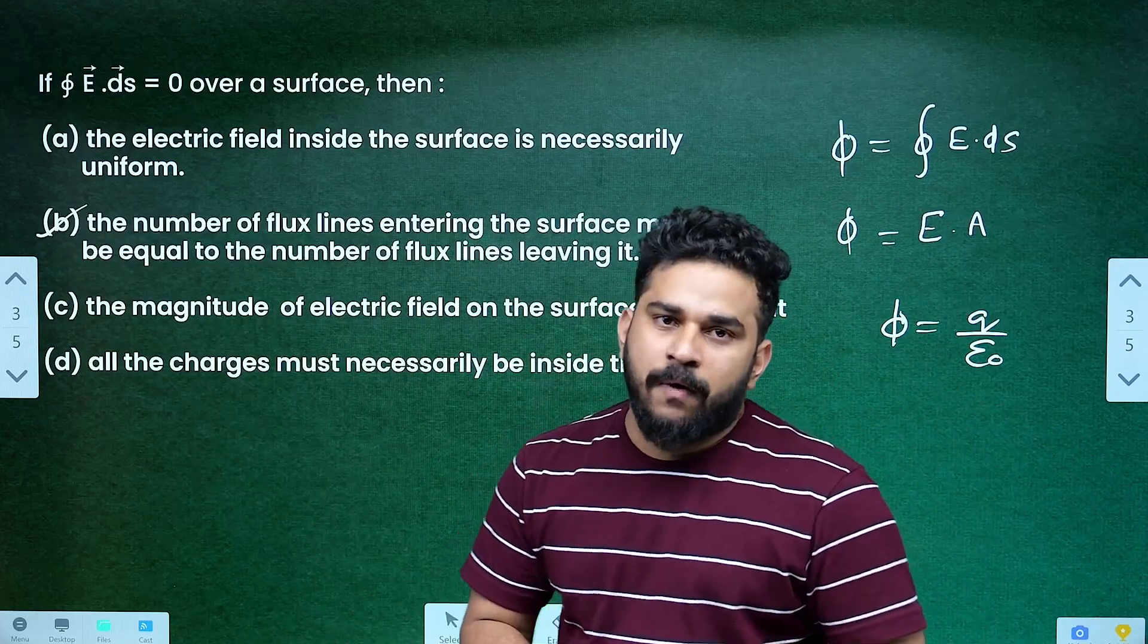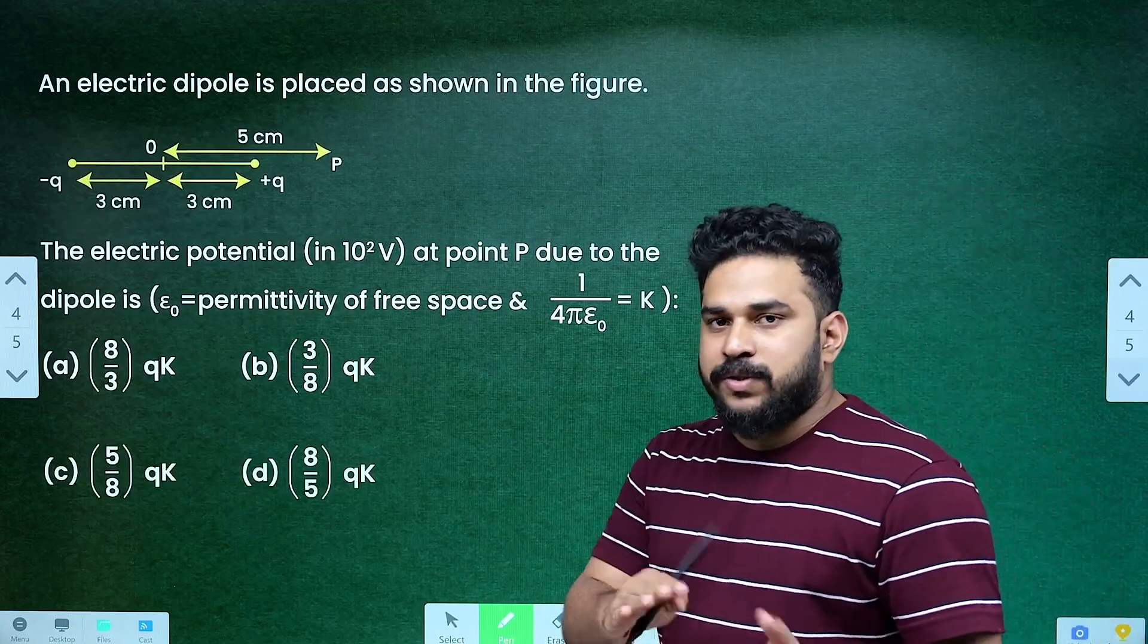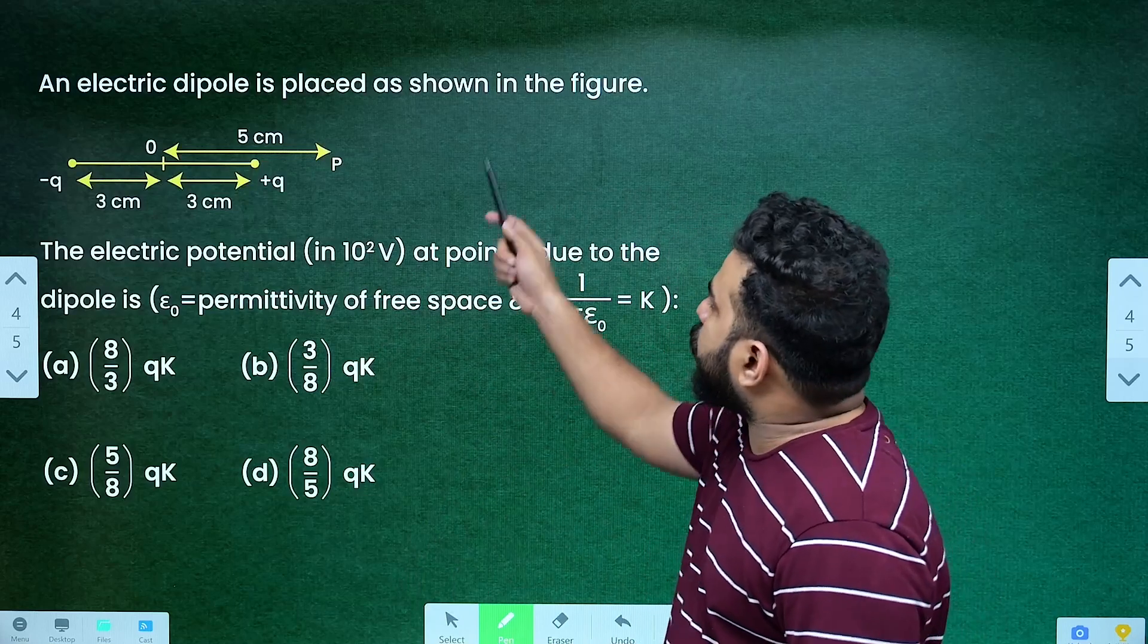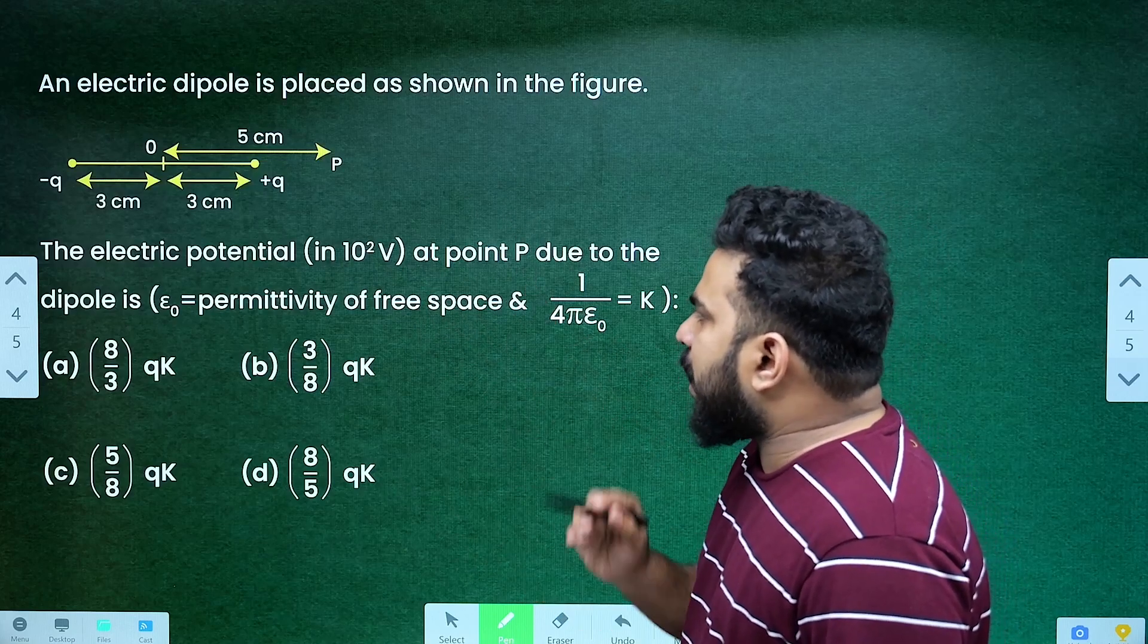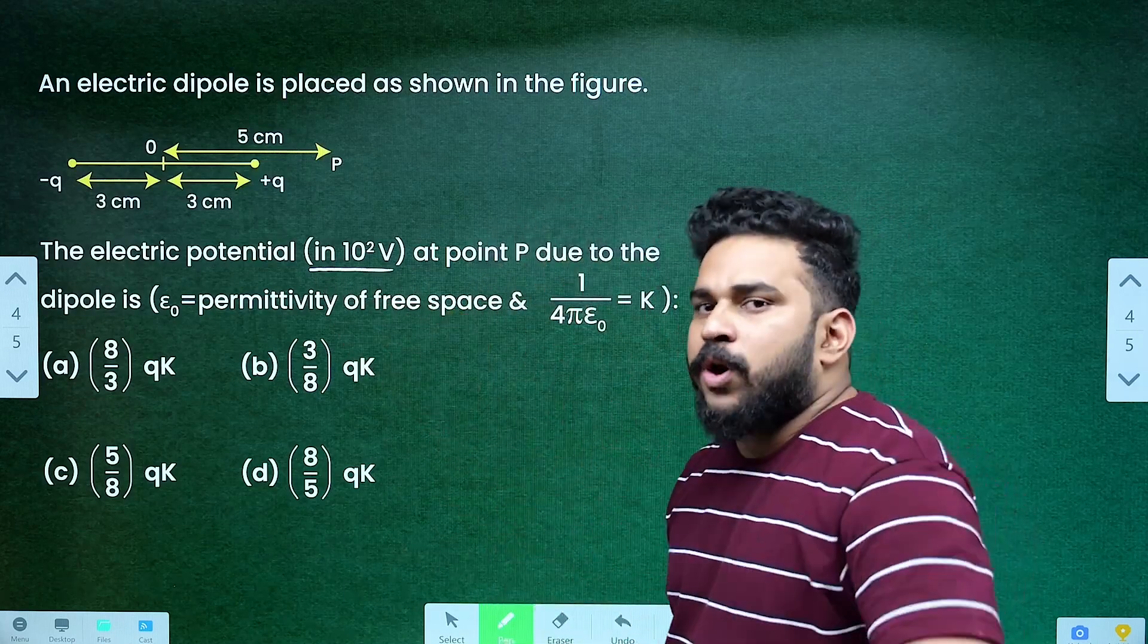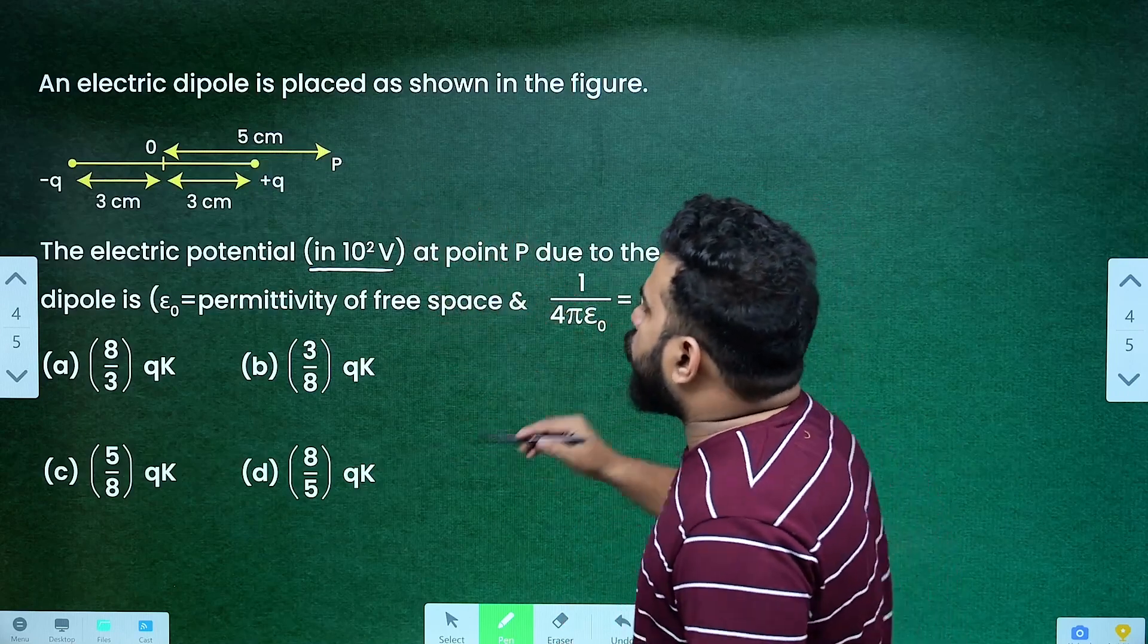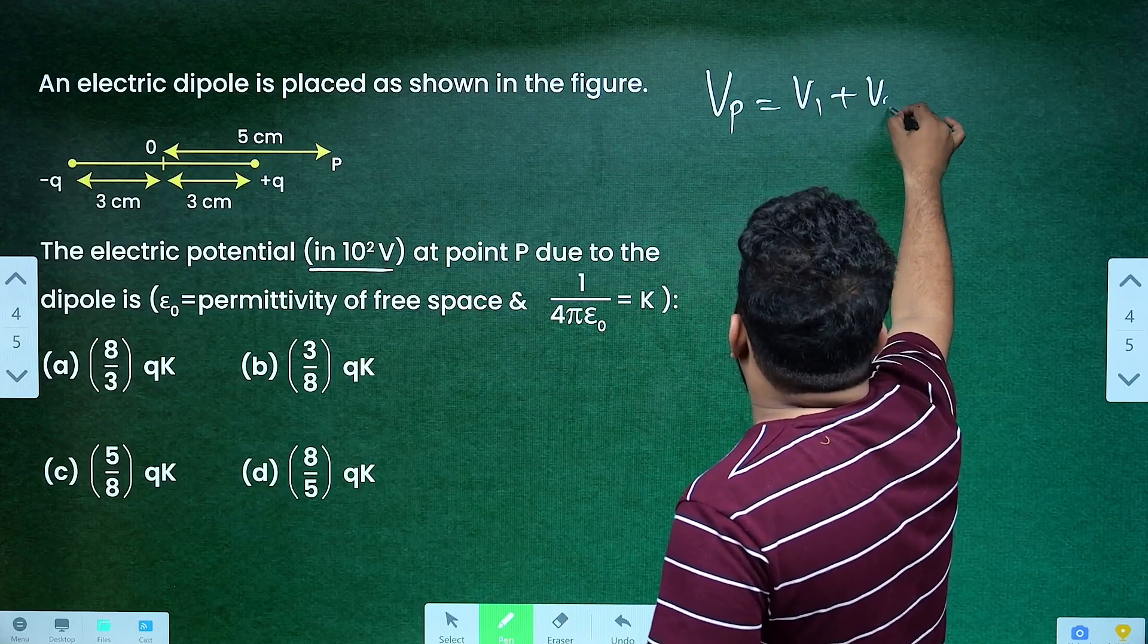Our third question is about potential and capacitance. The second chapter is electrostatics and electric charge and field, potential and capacitance. We have minus q and plus q, that is a dipole. At point P, the electric potential is 10 raised to 2 volts.